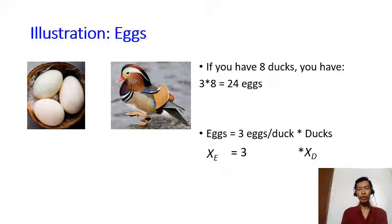You can say x_e for eggs equals 3 times x_d. Notice that even though in the language we say each duck produces 3 eggs, one duck 3 eggs, you notice that in the formula it's kind of the other way. You're saying that eggs equals 3 times ducks. So really keep this in mind.